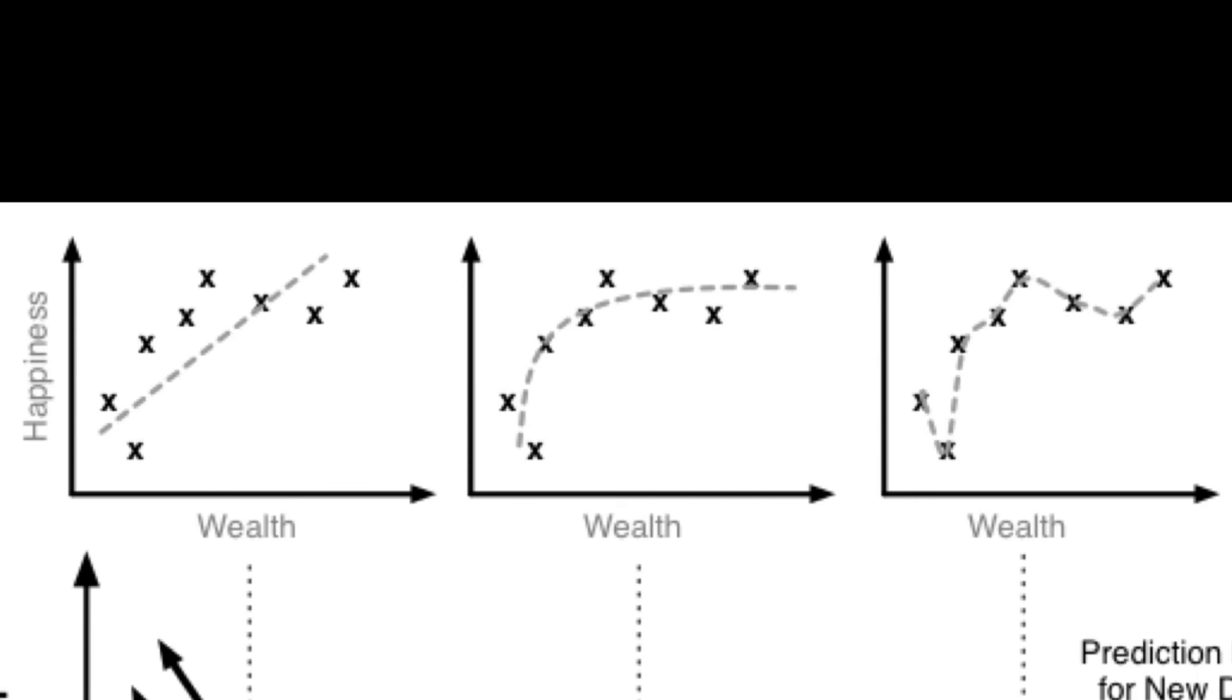What's going to happen is every time you add more historical data, you're just going to have a jagged line. You have no real generalization, which means if you run a test individual through—you know their wealth and you try to gauge their happiness level—you're not really going to have any way of giving a good prediction.